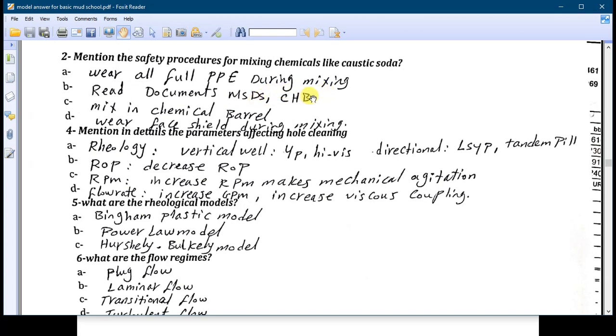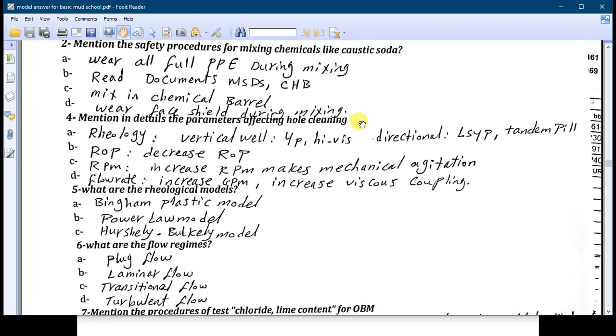Number three: you have to mix the caustic soda in mixing chemical barrel, in chemical barrel, not added directly through the hopper or through the shaker or through the tank. They are added through chemical barrel. Number D: you have to wear face shield during the mixing. So these are small notes about the caustic soda mixing.